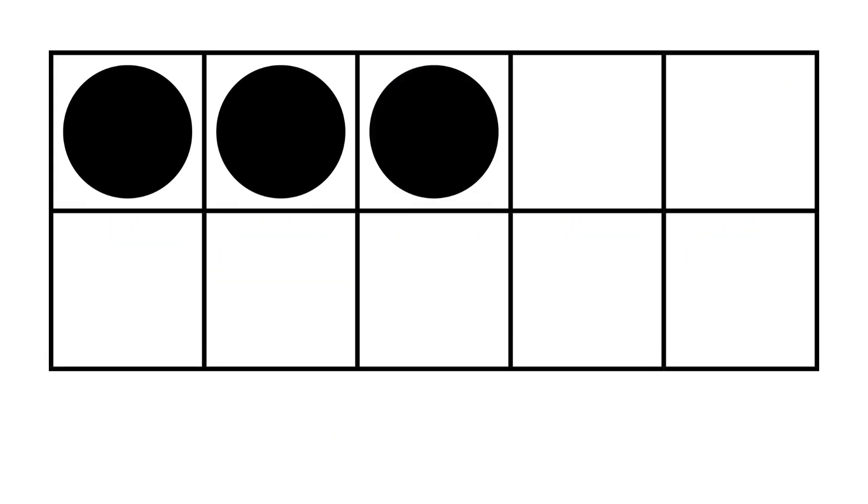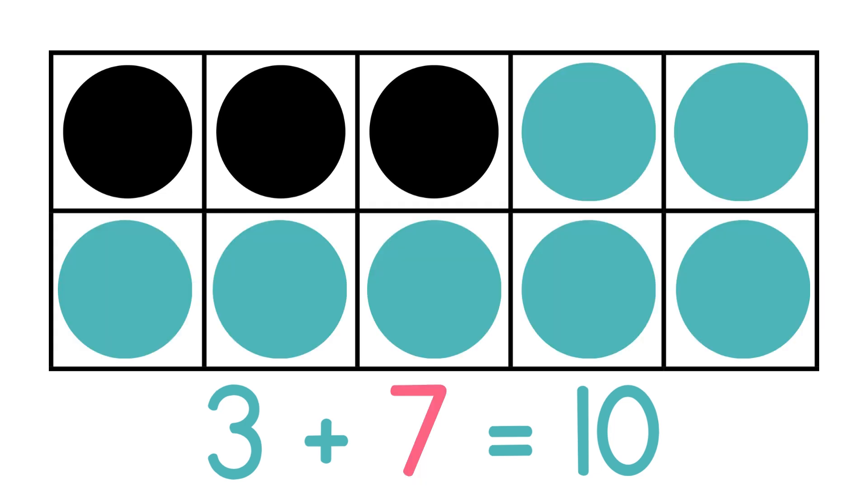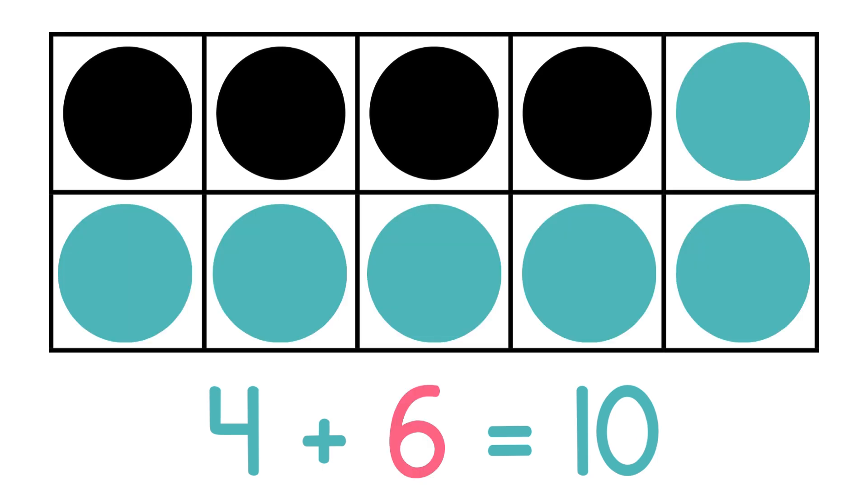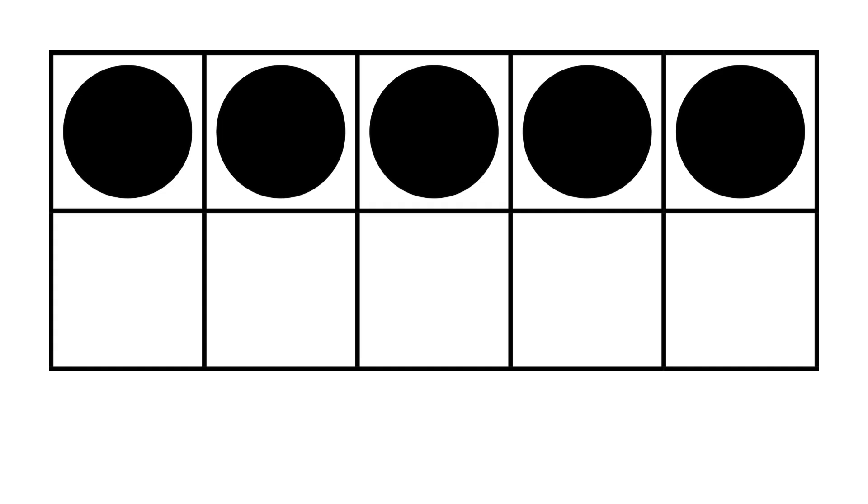We have three circles, plus how many more circles do we need to get to 10? 3 plus 7 equals 10. Here's four circles. 4 plus what makes 10? 4 plus 6. And now we have five circles. 5 plus what makes 10? 5 plus 5 makes 10.